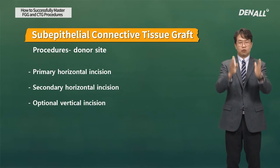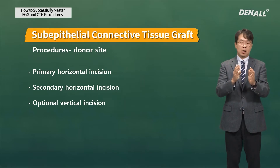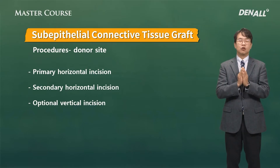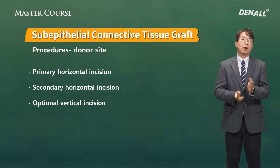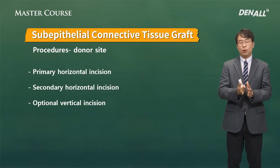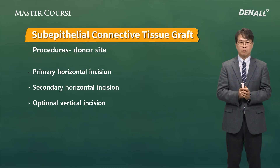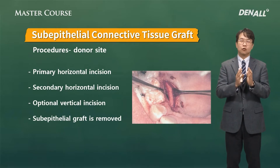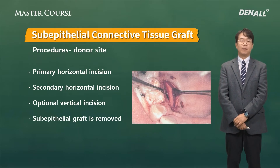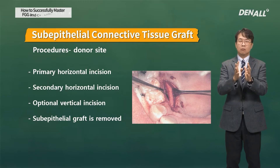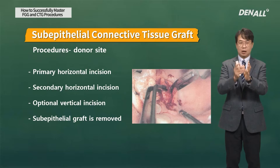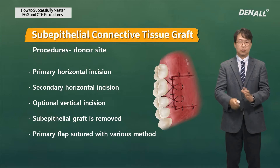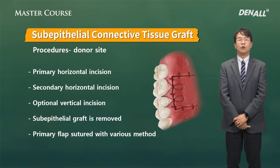An optional vertical incision can be made or omitted. If you are not very experienced, a vertical incision is recommended, as it is very important to secure visibility during surgery. But once you get used to it, the vertical incision does not have to be made. A partial thickness flap is then taken, and using various sutures the donor site is finished.